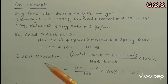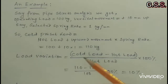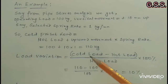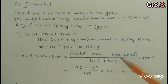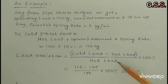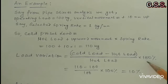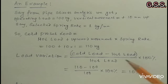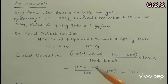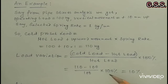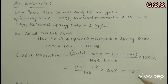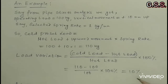Load variation equals cold load minus hot load divided by hot load multiplied by 100%, which equals 110 minus 100 divided by 100 multiplied by 100%, which equals 10%.